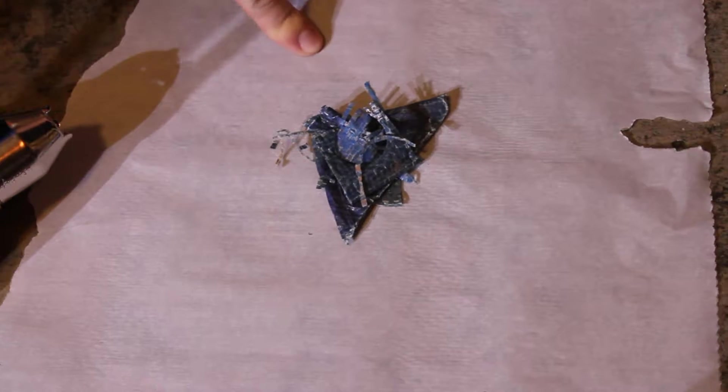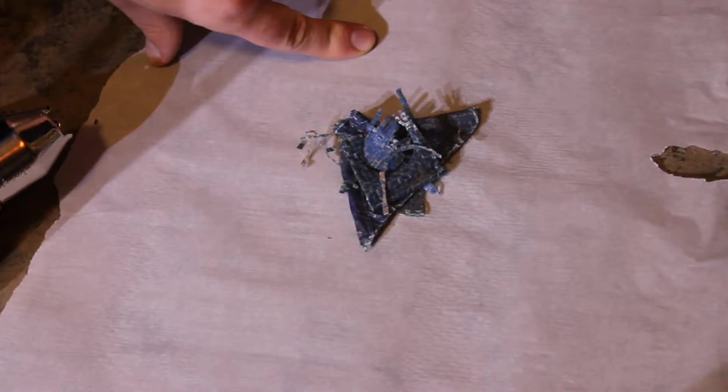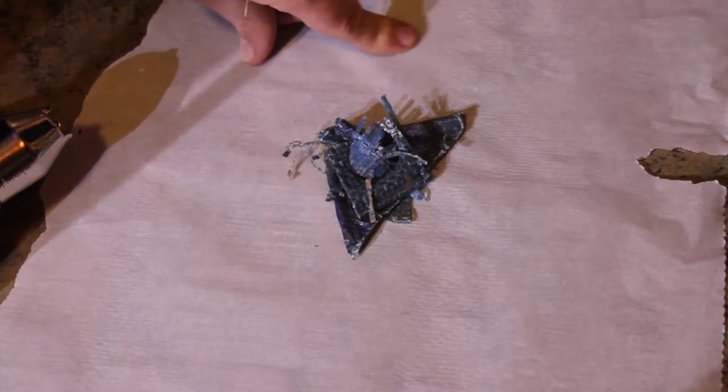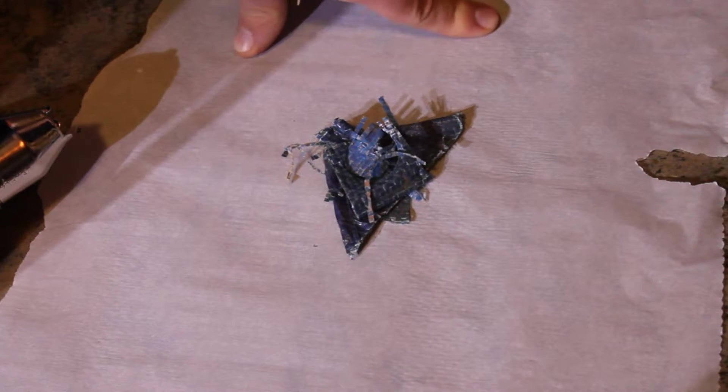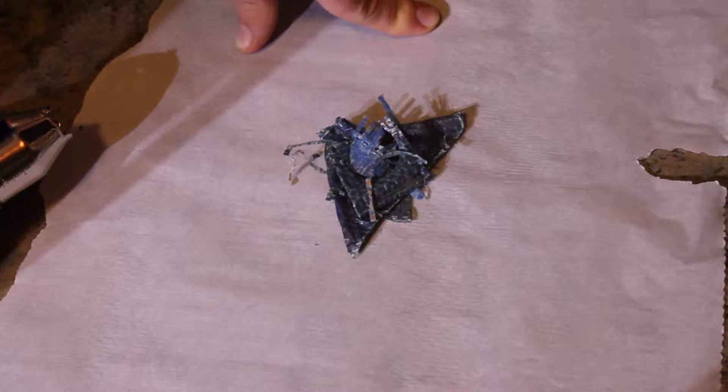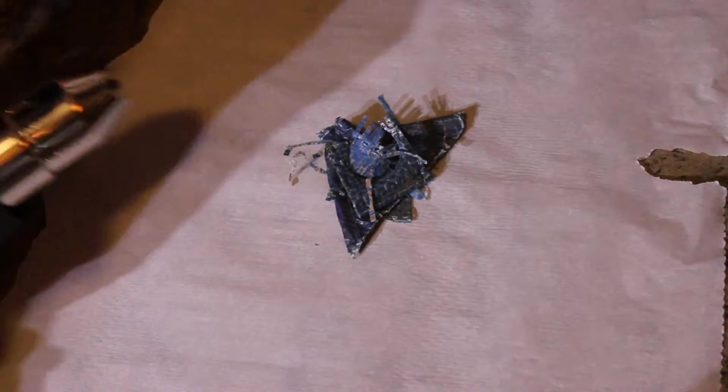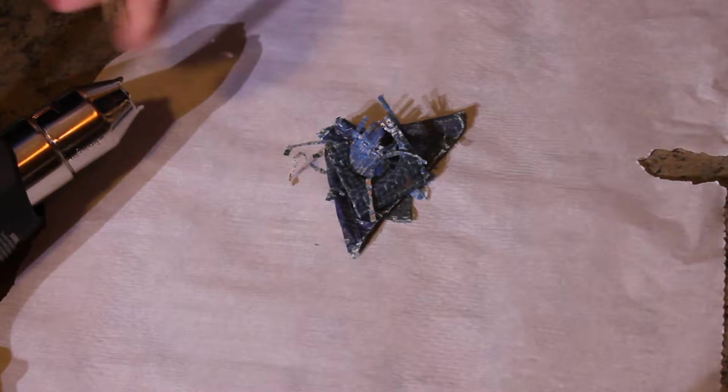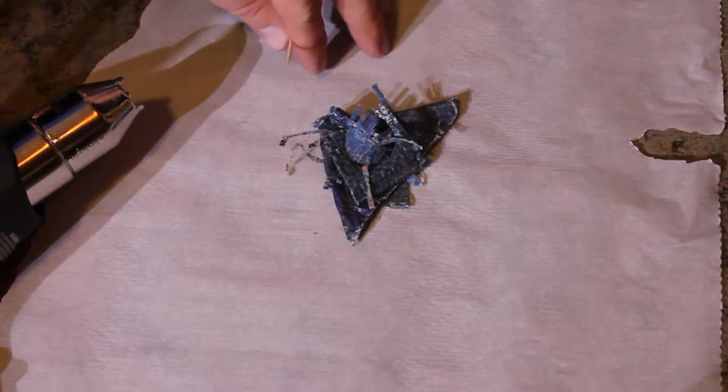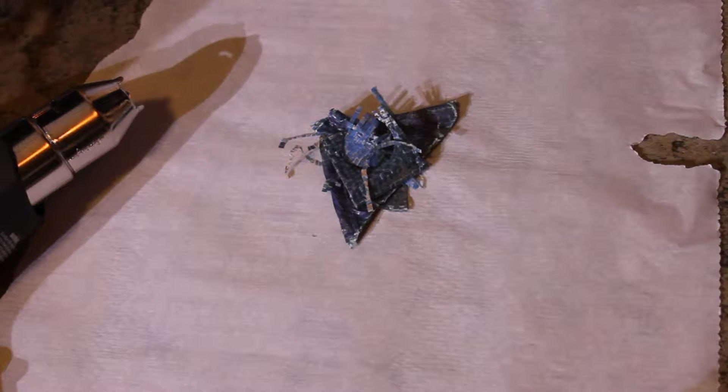And this is some parchment paper that I got from Walmart that's supposed to be non-stick. I'm not sure if it's really going to work as non-stick, so we're just going to do a little experiment here and we're going to see if it works like it's supposed to. I'm going to melt some of this. I've got my heat gun ready to go. And we're just going to melt it with a heat gun and we're going to see if this really does perform as a non-stick for the plastic that's melting.